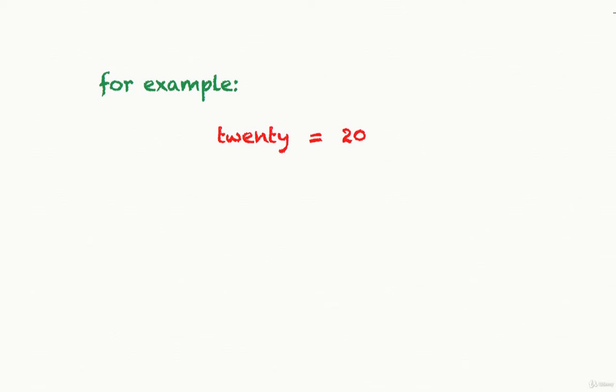We can use the assignment operator equals to assign numbers to variables. Here we have created a variable named twenty and assigned the number 20 to it. So now this variable will contain value 20 and can be used anywhere in the code.